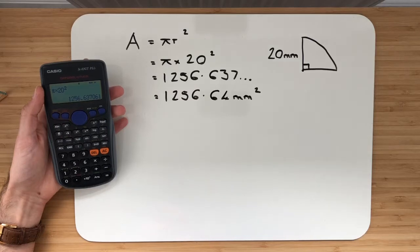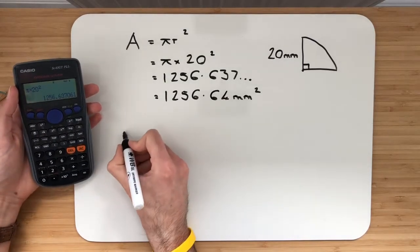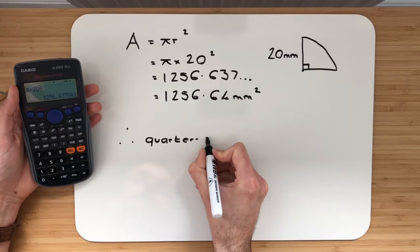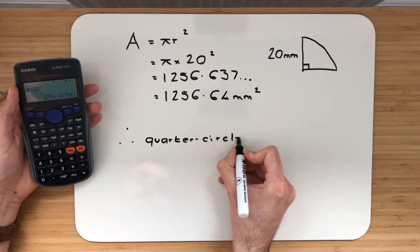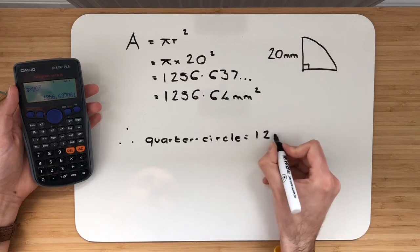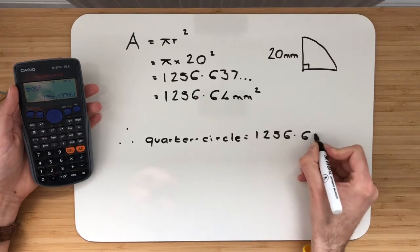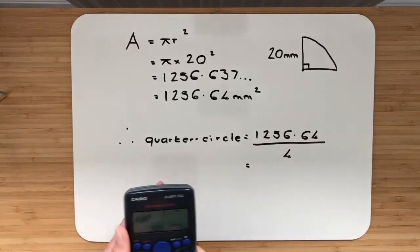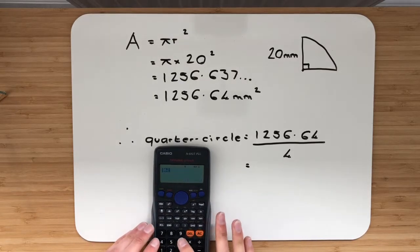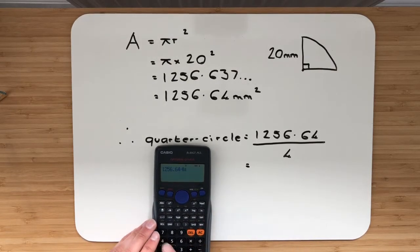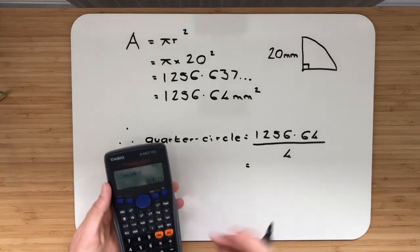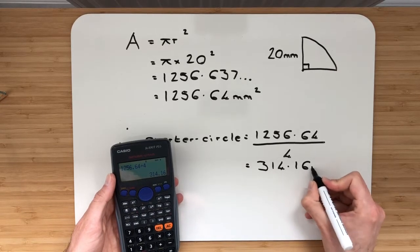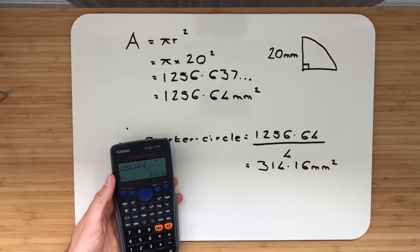Now the question asked us for a quarter circle. That's a full circle. So therefore we'll just write quarter circle, and that will be 1,256.64 all divided by 4. We take that into our calculator. We're going to take our 1,256.64, divide that by 4, and that will give me an answer of 314.16, remembering your units, square millimetres.